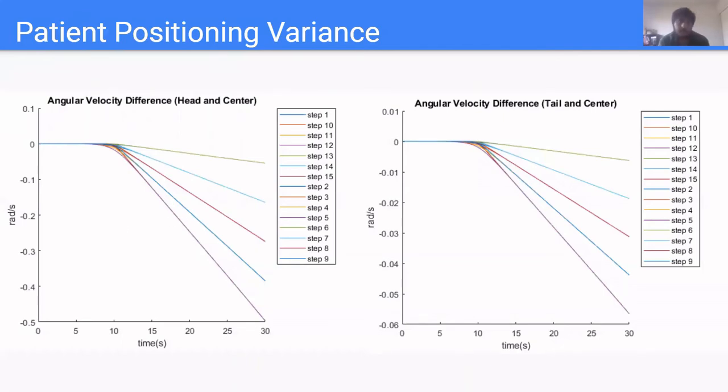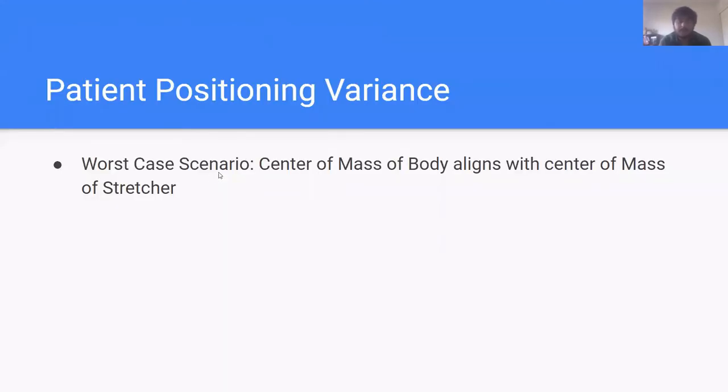For patient positioning variance, we have three cases. The head case, where the head of the patient is closer to the edge of the stretcher, the tail case, where the foot of the patient is closer to the edge of the stretcher, and the center case, where the center of mass of the patient is in alignment with the center mass of the stretcher. The graph on the left shows a difference in angular velocity between the head and center case, and the graph on the right shows a difference in angular velocity the tail and center case. The fact that these graphs have negative values imply that the center case always has a greater angular velocity, making the center case the worst case scenario. So the worst case scenario is when the center of mass of the body aligns with the center of mass of the stretcher. However, in all our tests, the controller passed the safety requirements in this worst case scenario.